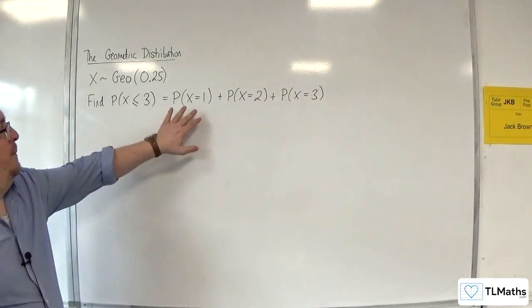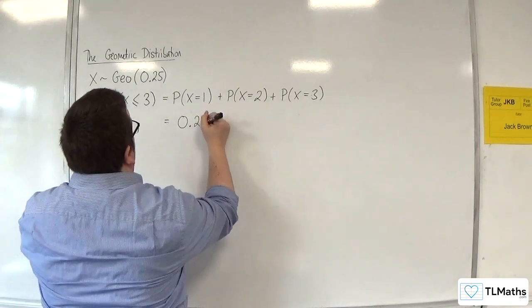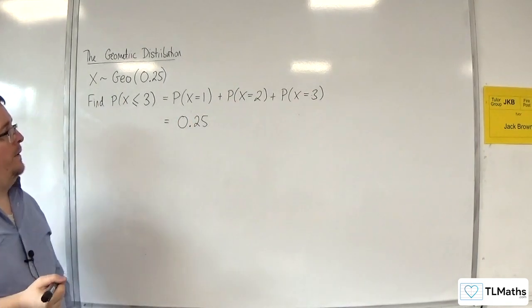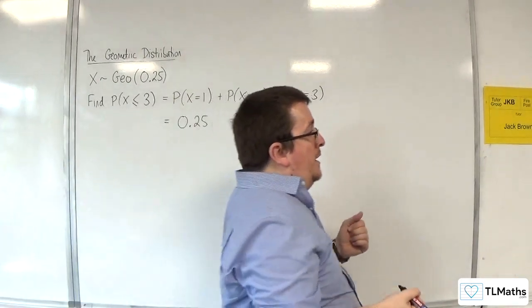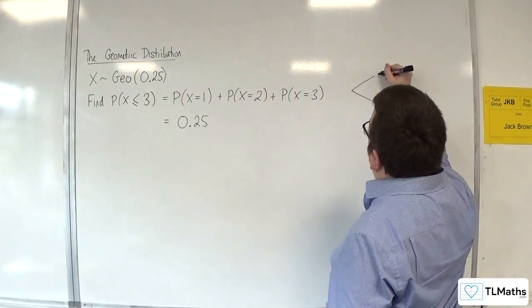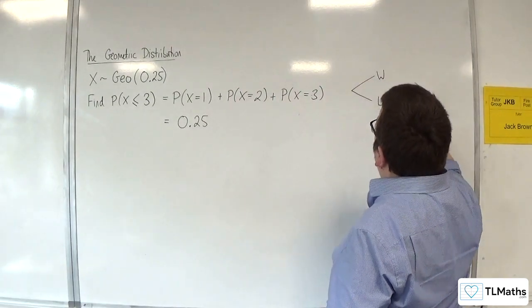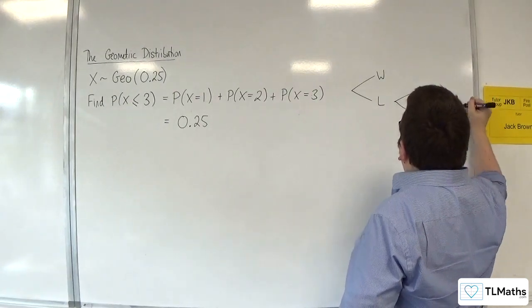So the probability of winning on the first attempt is 0.25. If you think of it like a probability tree, essentially I've got winning, losing, winning, losing, winning, losing.